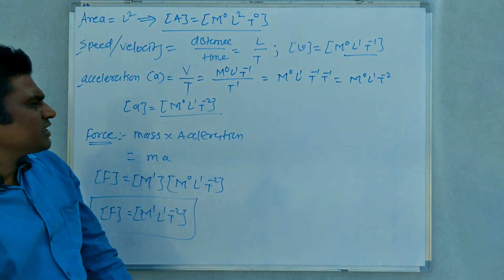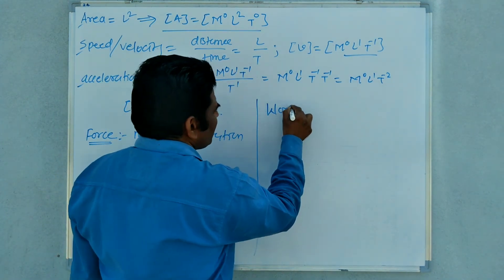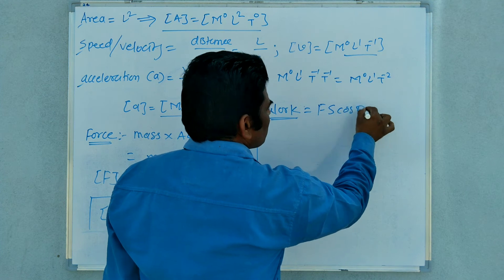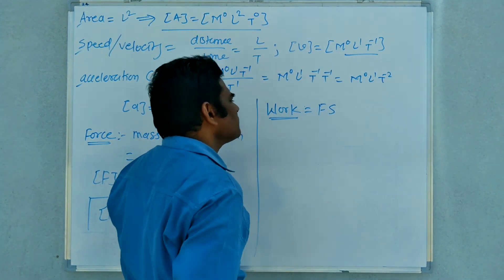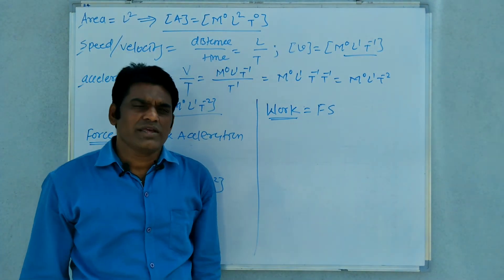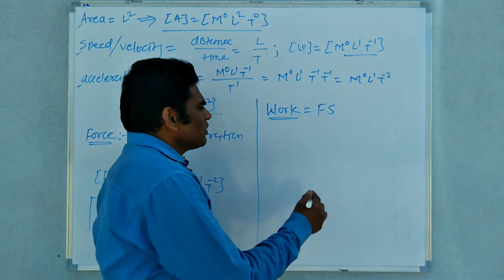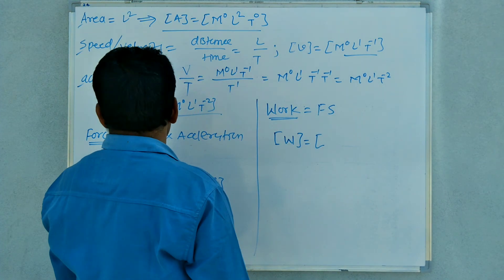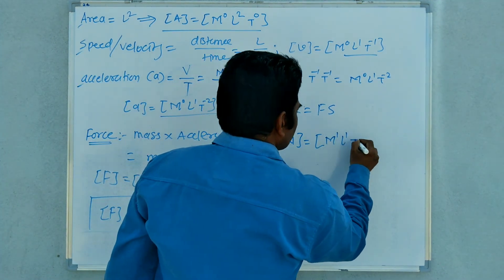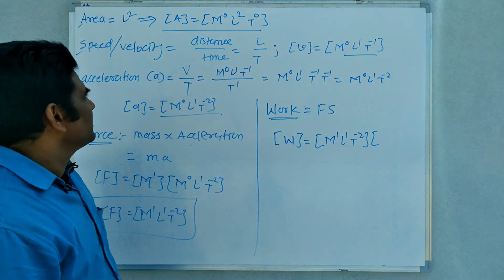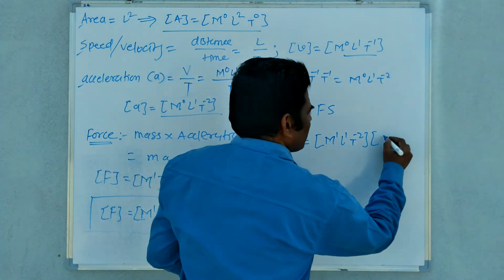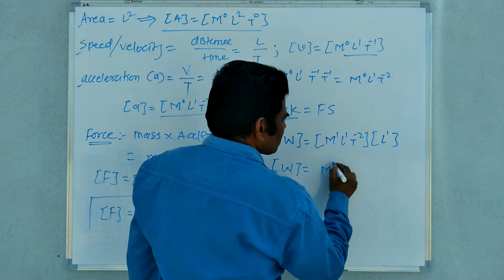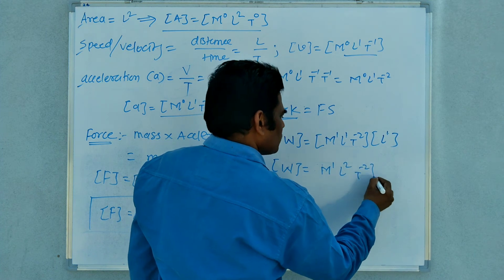The next physical quantity is work. Work is force into displacement: W = F×S. Dimensions of work = dimensions of force × dimensions of displacement. Force is M¹L¹T⁻², displacement means length which is L¹. So M¹ × L¹ × L¹ = M¹L²T⁻². These are the dimensions of work.